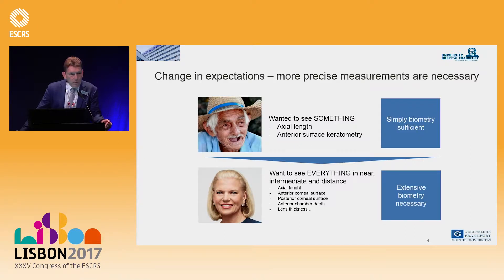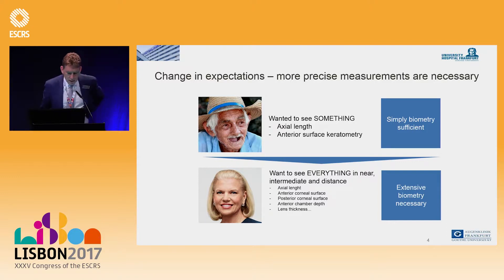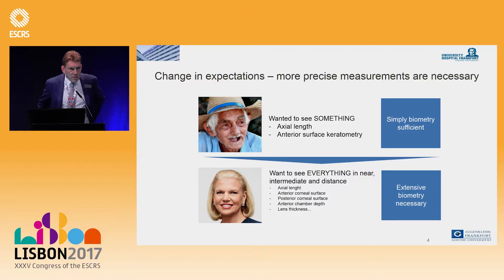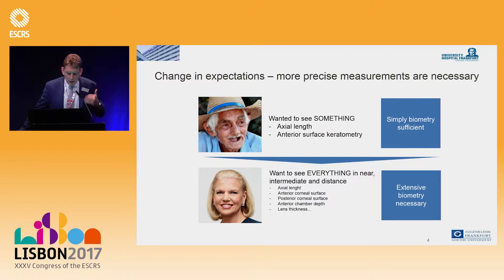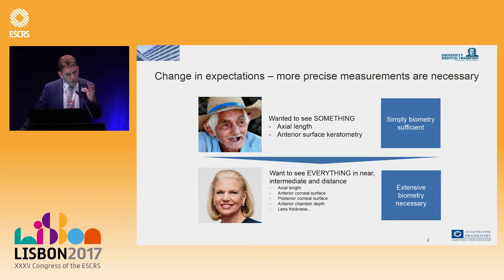Looking at the change in patient expectations today versus some years ago: cataract surgery was basically taking axial length, anterior surface keratometry, doing the calculation, and that was it. But nowadays patients want corrections for near, intermediate, and distance, and therefore precision has to be improved — we need better axial length measurements.